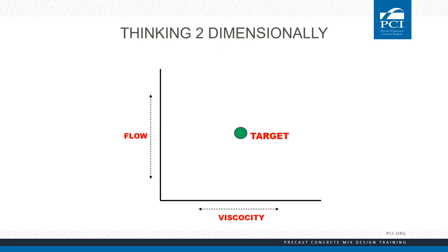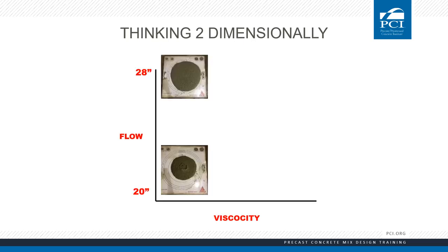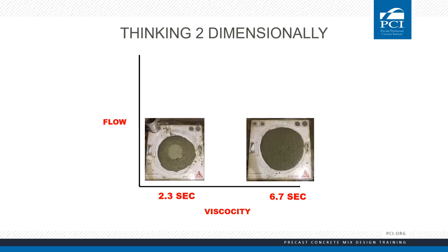Along the y-axis we have a low flow of 20 inches and a high flow of 28 inches. Along the x-axis, we have low viscosity to the left — that's a fast T20 time of 2.3 seconds — and high viscosity to the right — that's a slow T20 time of 6.7 seconds. You can even see the impact on stability of the mix based on that T20 time. The one with very fast flow shows segregation in the center of that flow patty; the one with very slow flow is a very stable mix. You can see how viscosity impacts the stability.